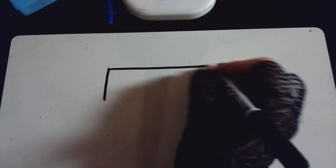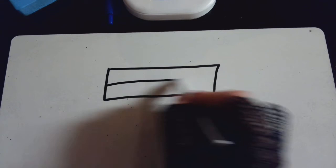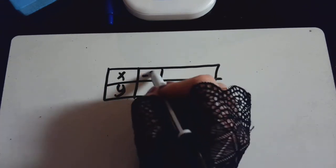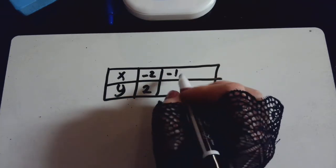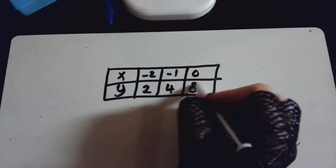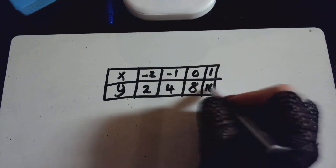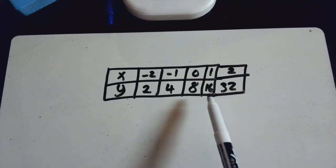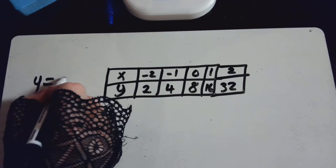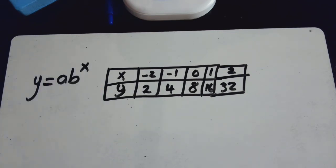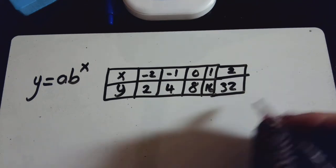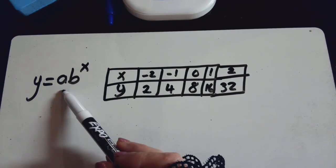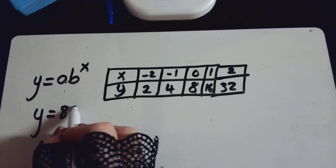A lot of times they just give you a table. So here's x and y: negative 2 and 2, negative 1 and 4, 0 and 8, 1 and 16, 2 and 32. The fact that it's not going at the same rate and it's increasing fairly fast should let you know it's an exponential function — not just a line. We know a already: the y-intercept is 8 when x is 0.